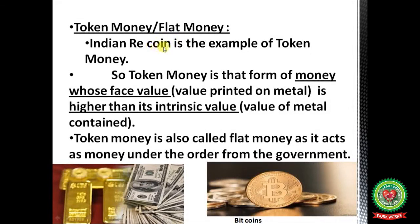Token money, or flat money — the Indian rupee coin is an example. Token money is that form of money whose face value, i.e., the value printed on the coin, is higher than its intrinsic value, meaning the value of the metal. Token money is also called flat money as it acts as money under the order of the government. For example, on a 5 rupee Indian coin, '5' is the face value — higher than what you would get by selling that coin as metal in the market.